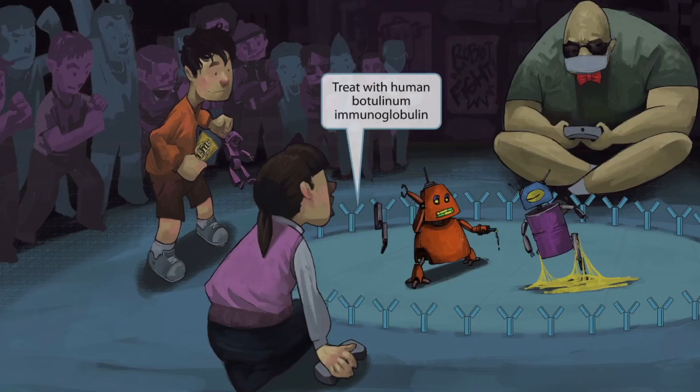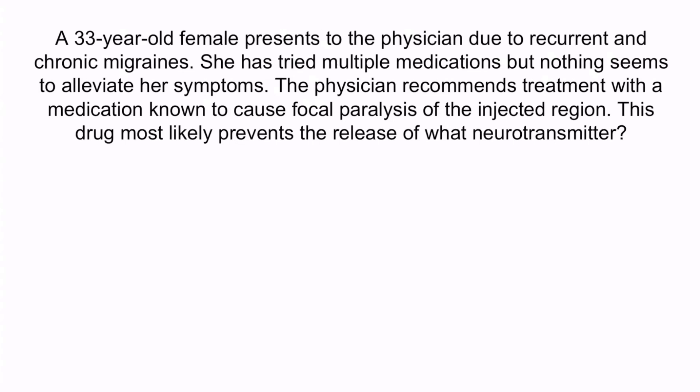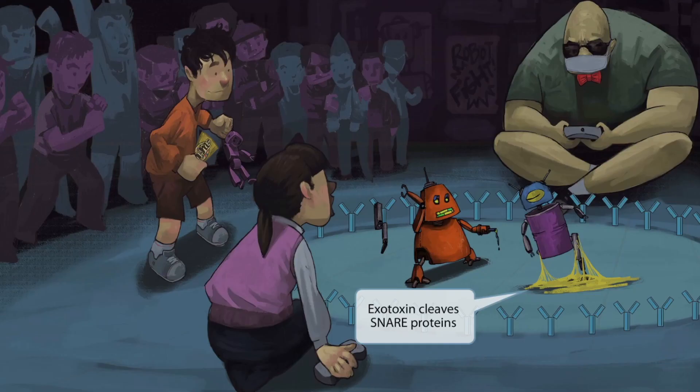Now that you've mastered Clostridium botulinum, let's review with a question. A 33-year-old female presents to the physician due to recurrent and chronic migraines. She has tried multiple medications, but nothing seems to alleviate her symptoms. The physician recommends treatment with the medication known to cause focal paralysis of the injected region. This drug most likely prevents the release of what neurotransmitter? The medication being described is Botox — the patient has chronic migraines, and the medication causes focal paralysis of the injected region. Botox is diluted Clostridium botulinum toxin, so it works by cleaving SNARE proteins associated with the release of acetylcholine into the synaptic cleft. The answer is acetylcholine. From the image, the snare-down robot with the seed-looking eye represents SNARE protein disruption and prevention of acetylcholine release.